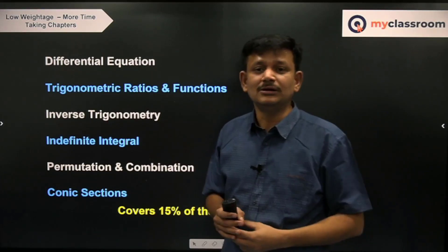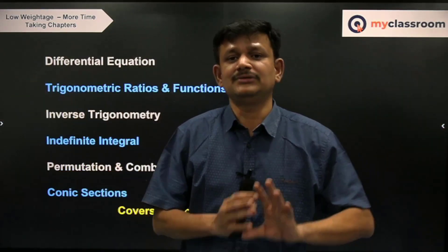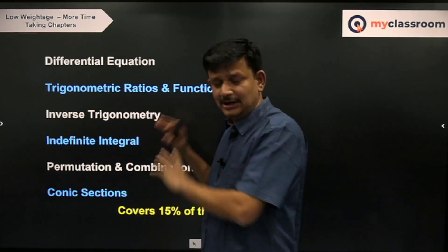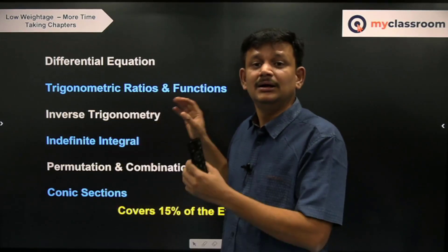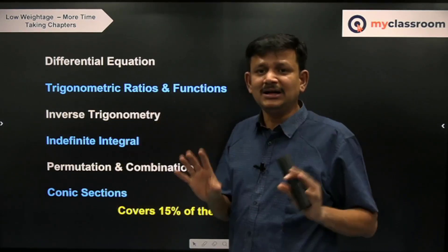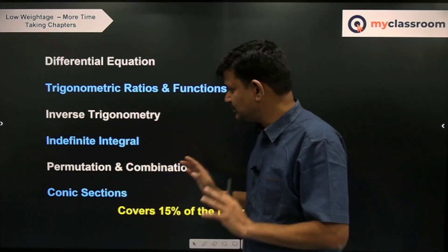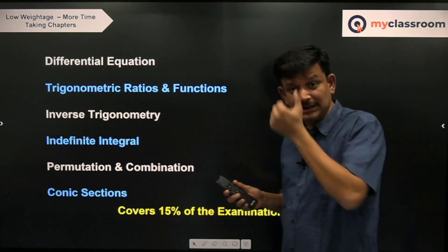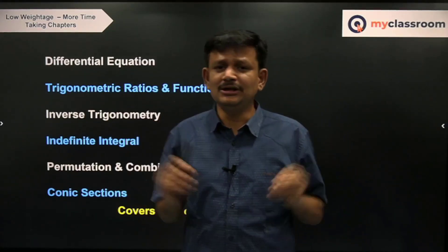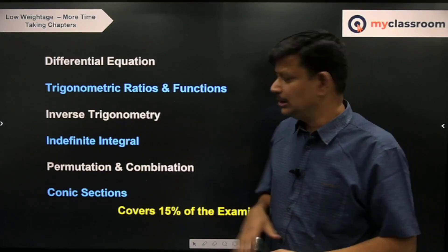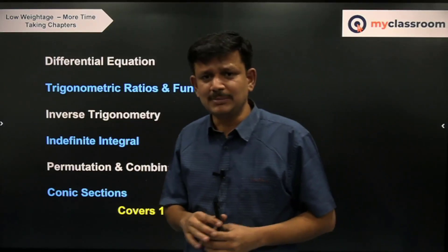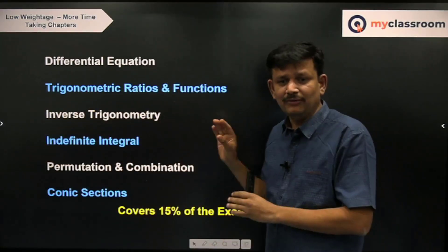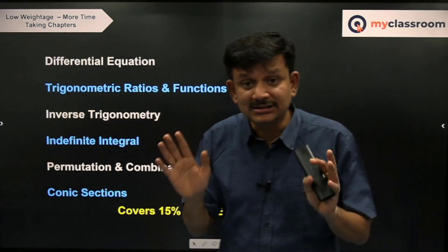Permutations and Combinations — do not be overwhelmed by the universe of questions in textbooks or advanced levels. In JEE Main, elementary counting questions are being asked. Do archive questions if you are not comfortable with the chapter. Conic Sections — not many questions are asked; there will be one or two questions maximum across parabola, ellipse, and hyperbola together. So this can be your last chapter.